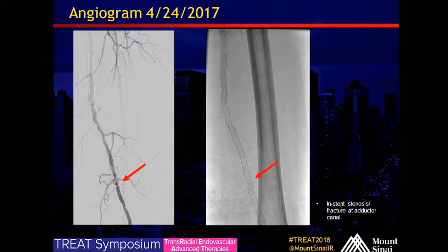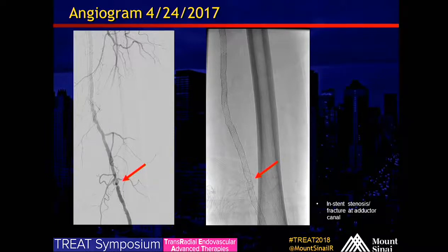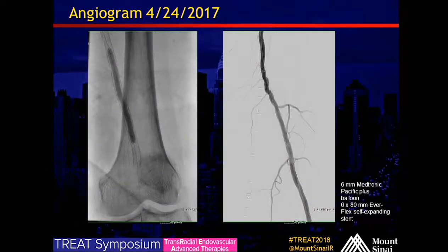Her ABIs were down below the knee. Her prior angiogram from about a year ago showed an area of severe stenosis within the adductor canal with an area of stent fracture as well. We treated this with balloon angioplasty and a 6 by 80 Everflex self-expanding stent.